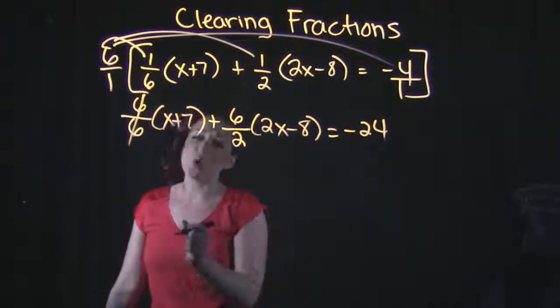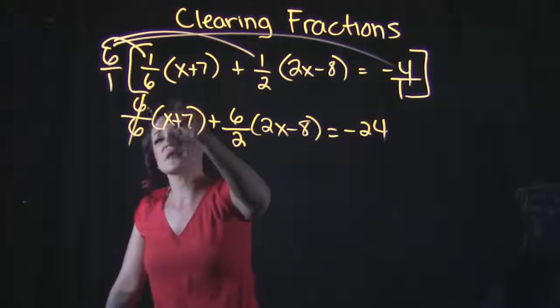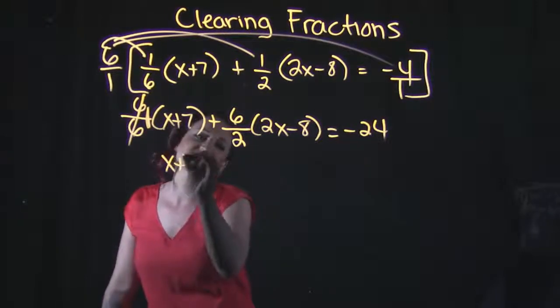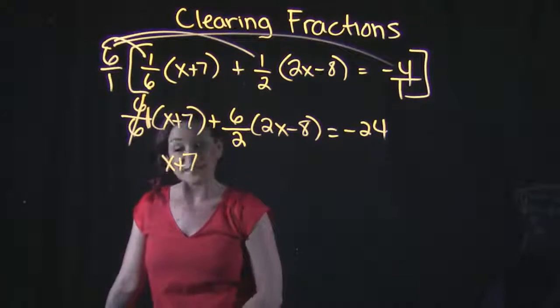Six divided by six is one, which means that cancels out. Technically, we don't have one times x plus seven, but one times x plus seven is just x plus seven.